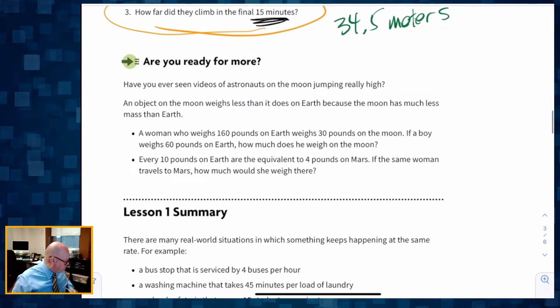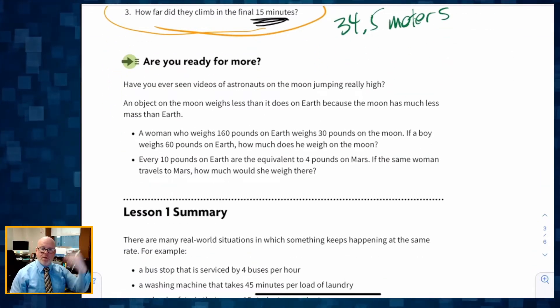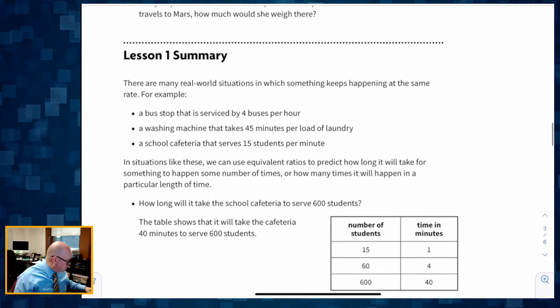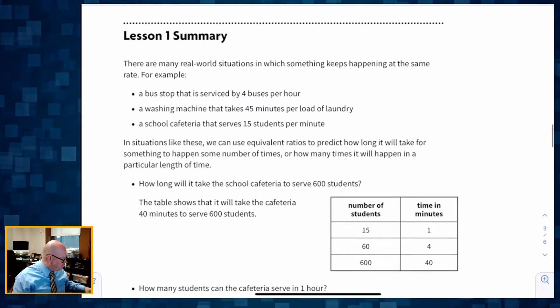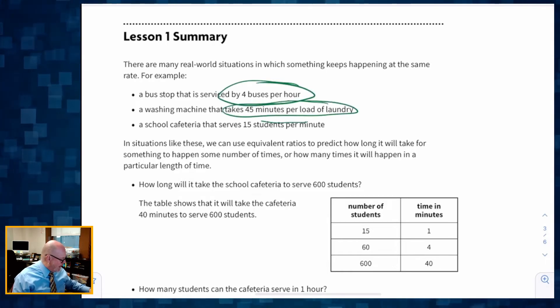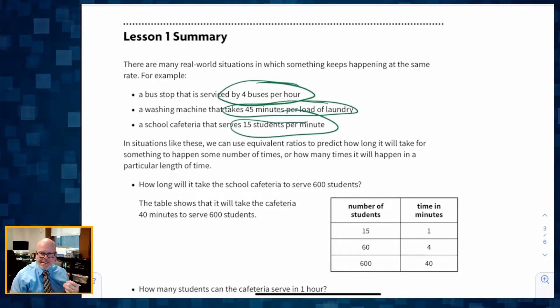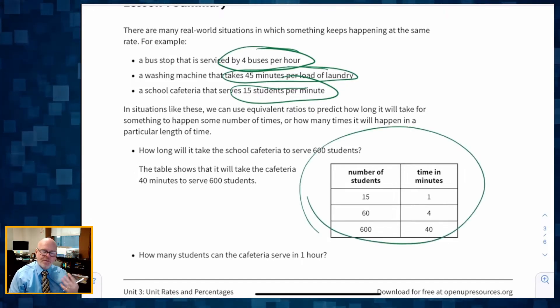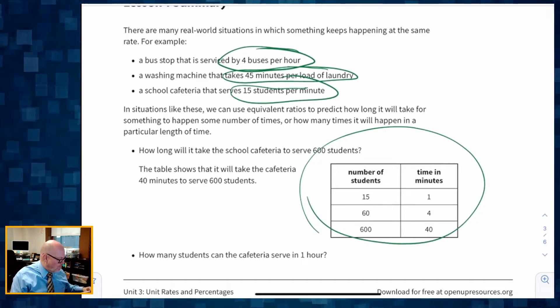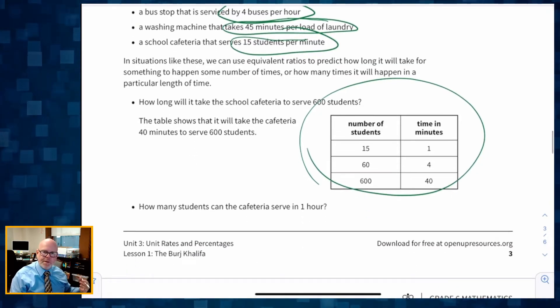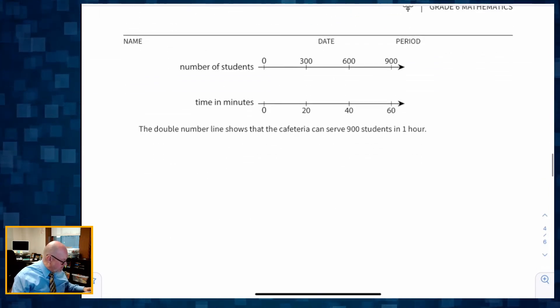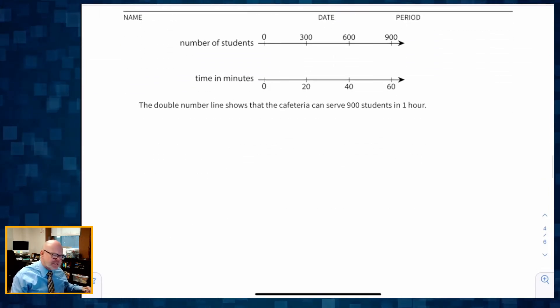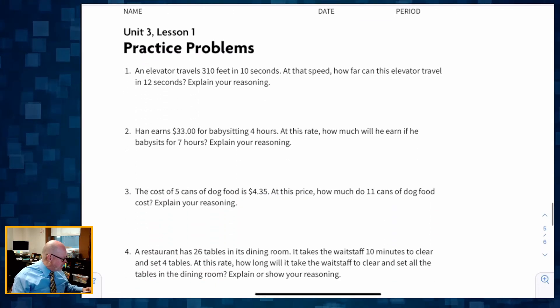And that wraps up the working part of this lesson. The summary is, the idea is we're looking for the word per, the idea of unit rates. And I'll tell you, making a table to create those units, to find those unit rates is a nice, handy way to go about it. Of course, we could use double number lines, we could use tape diagrams, but I'm going to stick with tables more often than not. Now let's get into some practice.